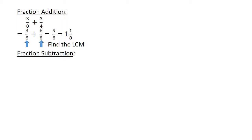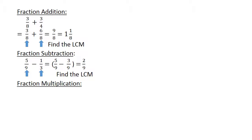Fraction subtraction: 5 over 9 minus 3 over 9 equals 2 over 9. Fraction multiplication: 2 over 3 times 4 over 6 equals 8 over 18, which is equal to 4 over 9.